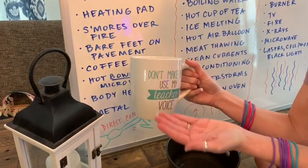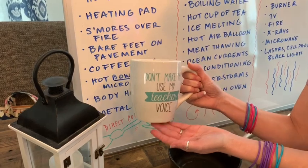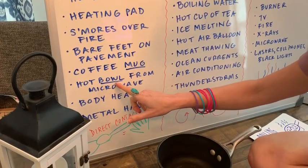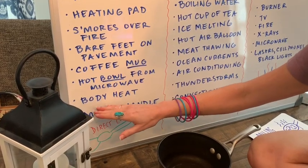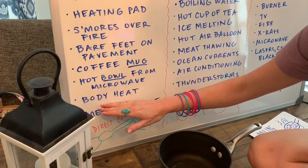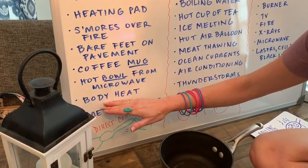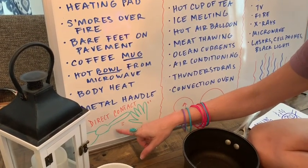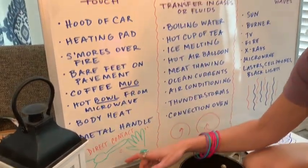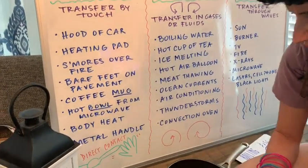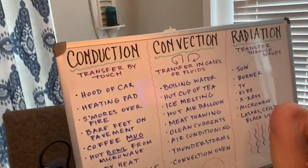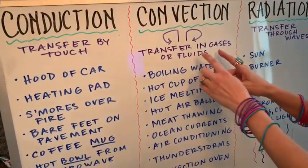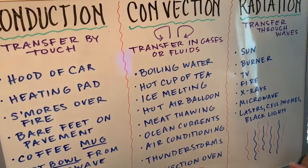Bare feet on pavement — direct heat in the summertime, super hot. A coffee mug gets hot when there's hot liquid in it because it's making direct contact. A hot bowl from the microwave — when you pull it out, the actual bowl is hot. Even body heat can count as direct contact. If you grab a metal spoon after it's been in contact with something hot, that's conduction — anything with direct contact.